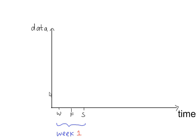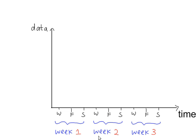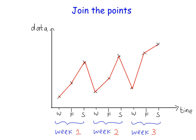The data is plotted against time. Time always goes on the horizontal axis - Wednesday, Friday, and Saturday for week one, and then for weeks two and three. Plot the points. These are the points for week one, week two, and week three. Join the points together, point to point, with straight lines.